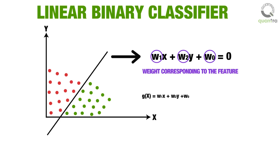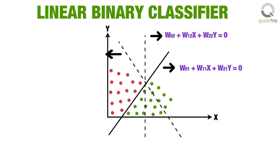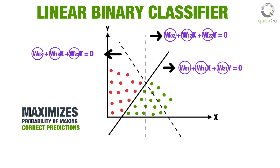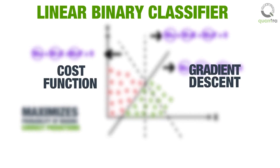The linear classifier will predict an outcome based on the sign of this function. The prediction would be positive if g(x) is greater than or equal to 0; else the prediction would be negative. The aim of the learning process is to construct a good weight vector — that is, the vector containing the weights of the equation: W = {W0, W1, W2}. A good weight vector is one which maximizes the probability of making correct predictions. This is done by minimizing the cost function using gradient descent.